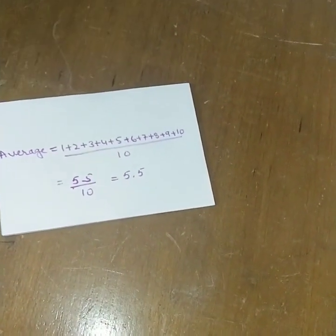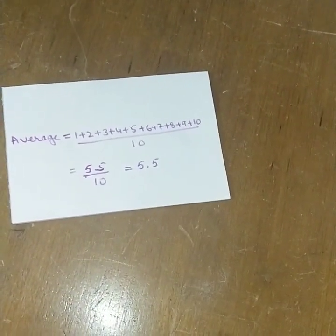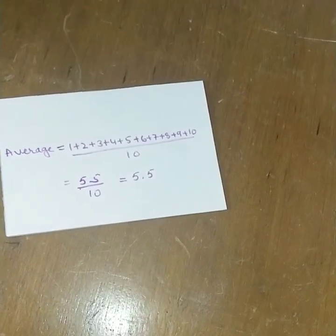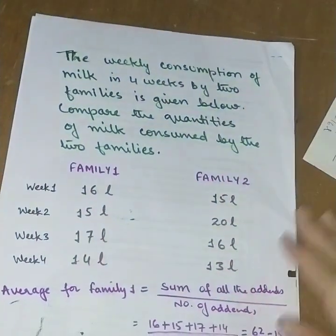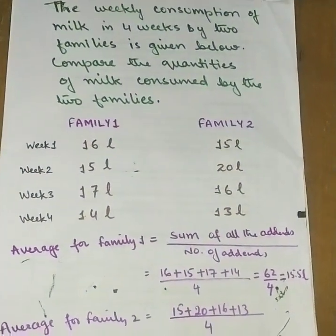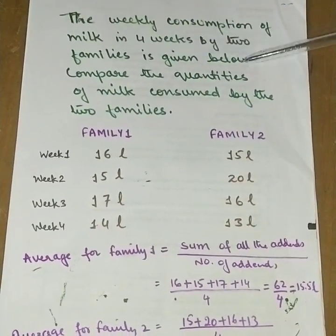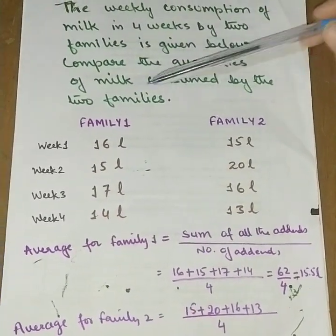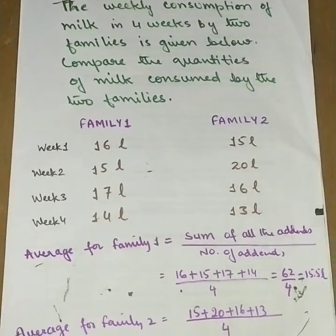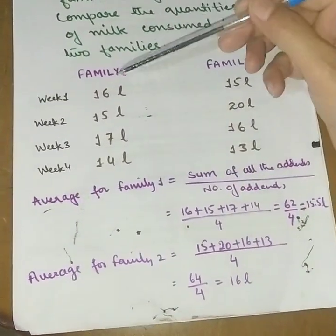With these three steps, you can find the average very easily, and you can also compare different groups by comparing their averages. The next example shows how to compare. The weekly consumption of milk in four weeks by two families is given below — compare the quantities of milk consumed by the two families.